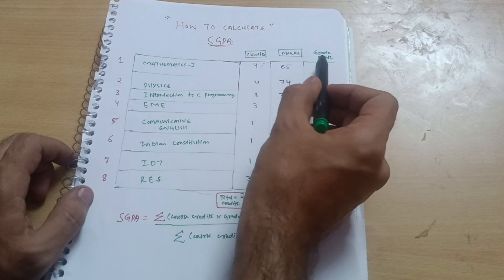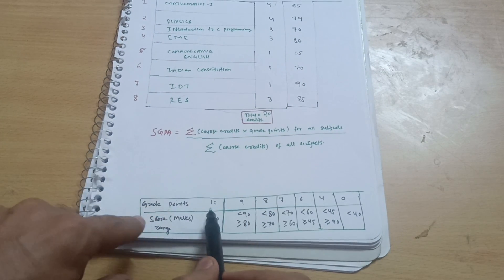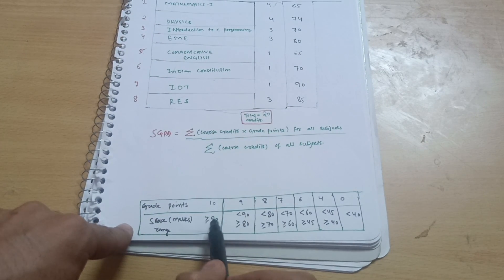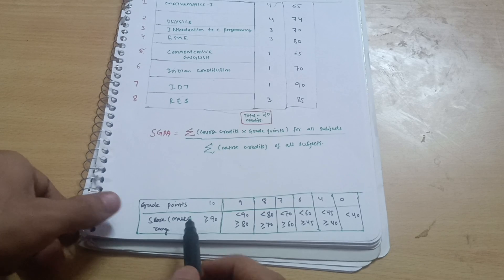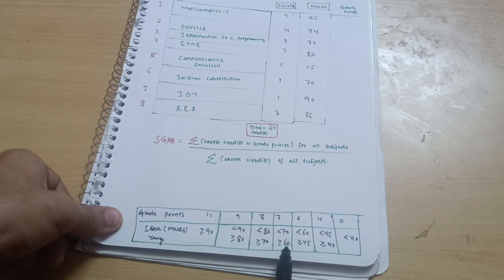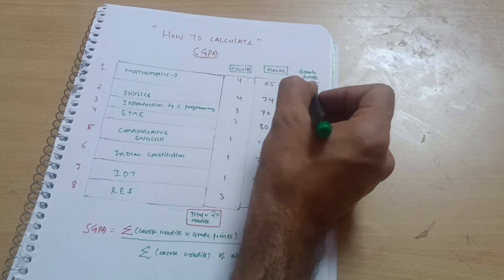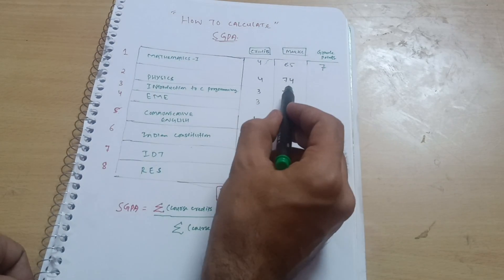To calculate grade points: if marks are ≥90, grade point is 10; ≥80 and <90, grade point is 9; ≥70 and <80, grade point is 8; ≥60 and <70, grade point is 7. So for 65 marks, it falls in the range of 60 to 70, so grade point is 7. For 74 marks, it is in the range ≥70 and <80, so grade point is 8.